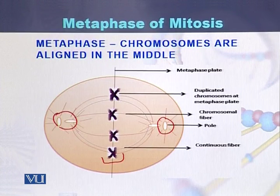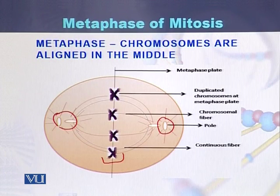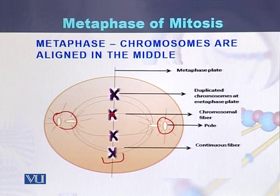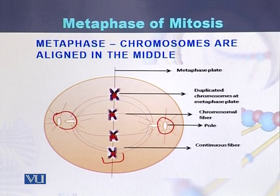There are spindle fibers emitting from these centrioles and they are attached to the centromeres of the chromosomes. Here we can see that the spindle fibers have been attached to the centromeres of the chromosomes.